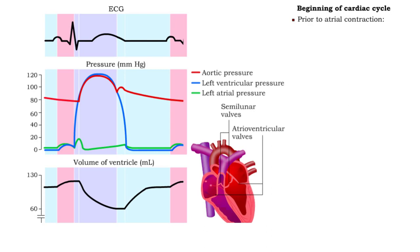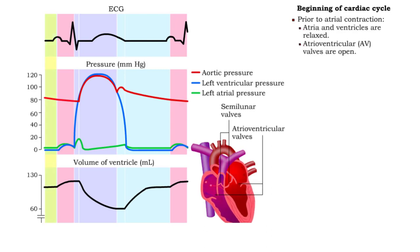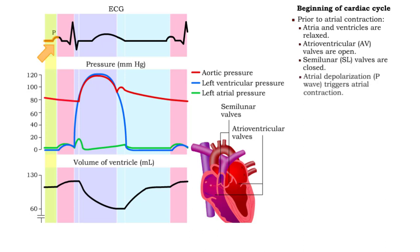Prior to atrial contraction, the atria and ventricles are relaxed, atrioventricular valves are open, and semilunar valves are closed. The ventricles fill with blood.